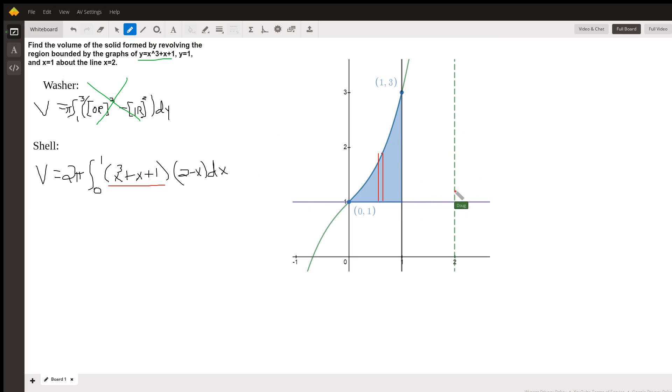And the average radius is the distance from the axis of revolution to the center of the shell. So this distance right here is x, or the coordinate of this point is x comma something.